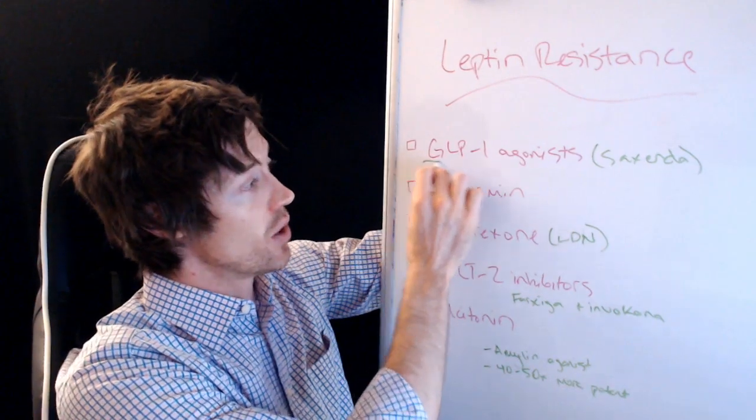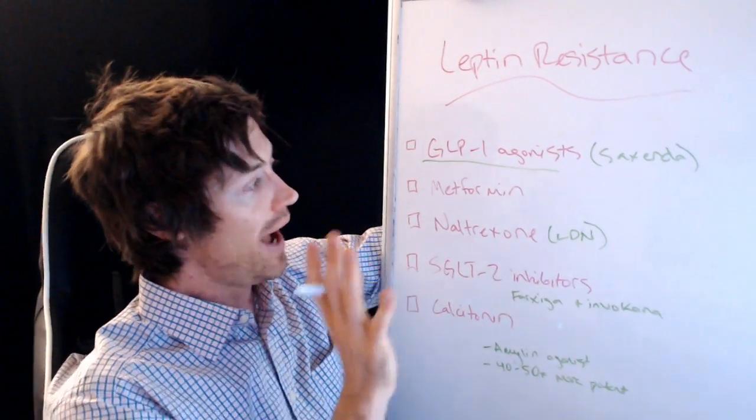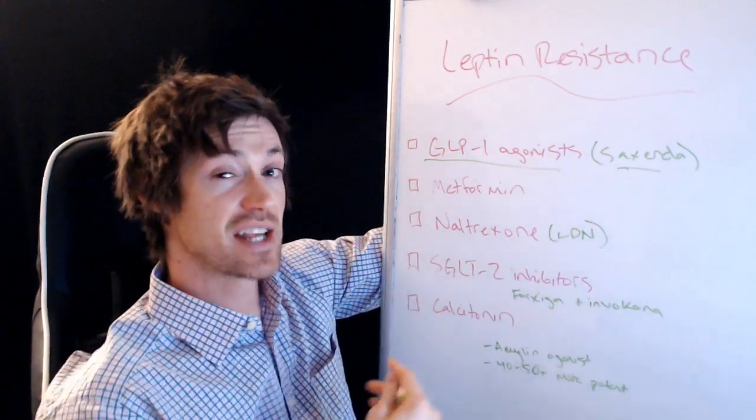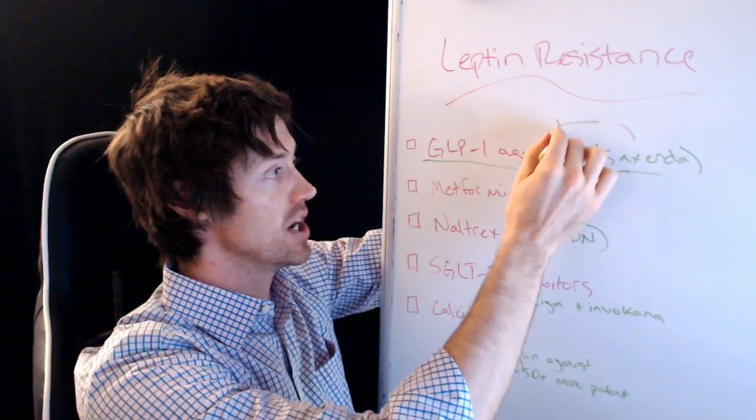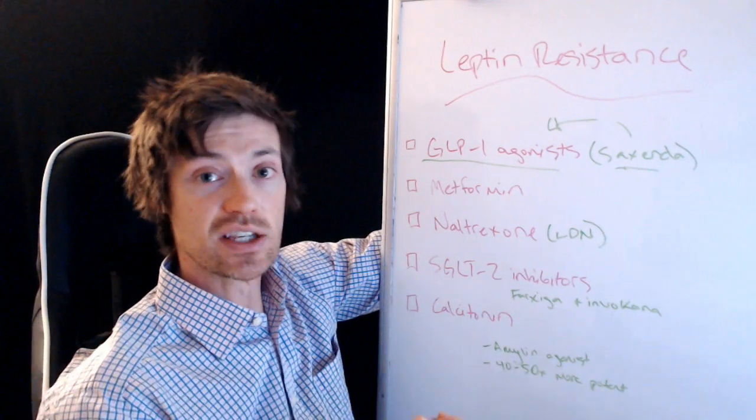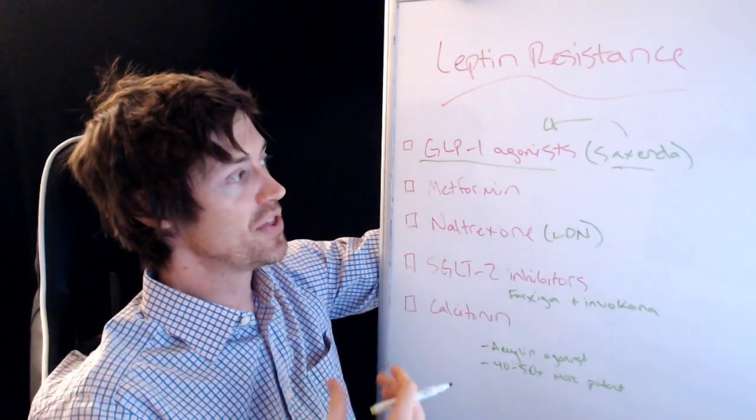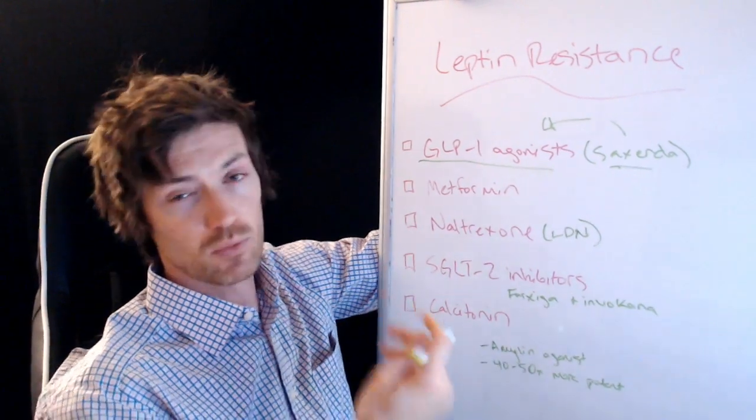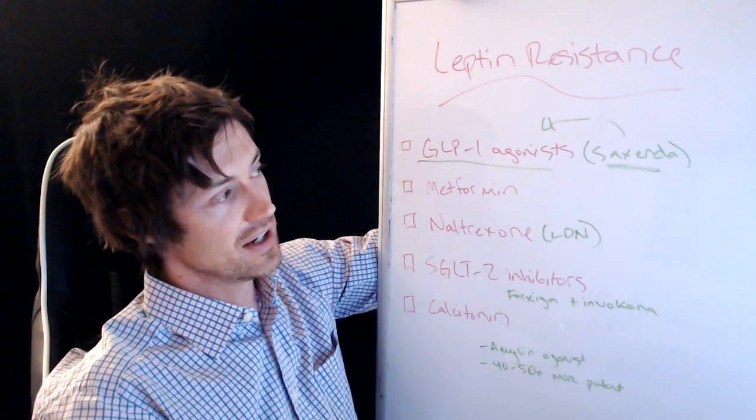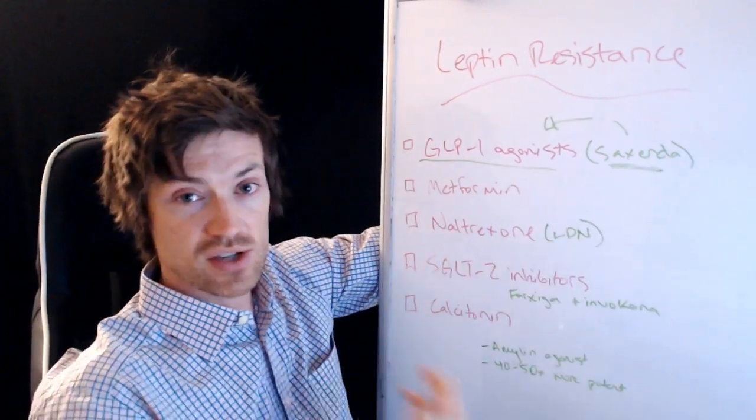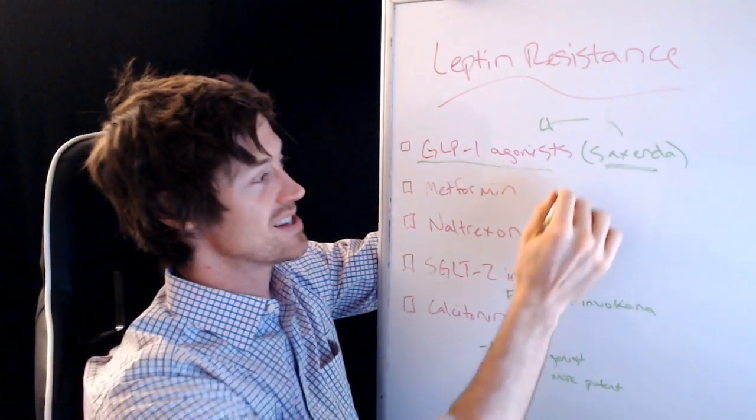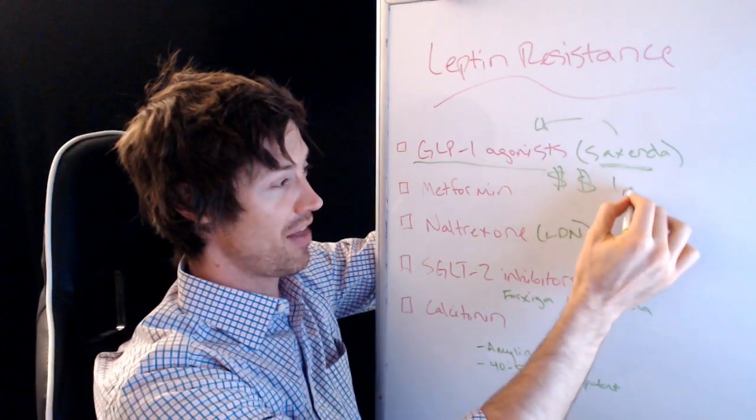Okay, so medication class number one is known as the GLP-1 agonist. The name of the medication which I think is the best is Saxenda. Saxenda is a type of GLP-1 agonist, and what these things do is they were originally designed to treat type 2 diabetes, so they help with insulin resistance and blood sugar. But they were found to be so effective at helping people lose weight that one of the pharmaceutical companies just rebranded one of their medications and called it Saxenda, and yes, it works incredibly well.